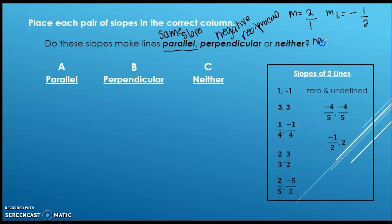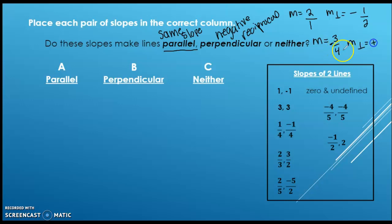Let's say our slope was negative three-fourths. The negative reciprocal — the negative becomes the opposite, making it positive. Flip your fraction to get four over three. So that would be your perpendicular slope.